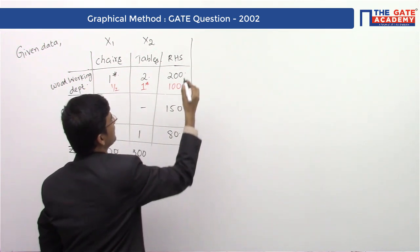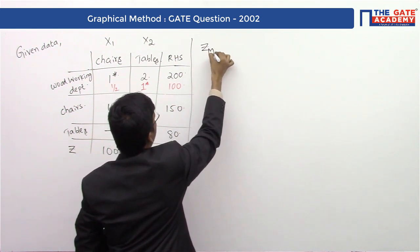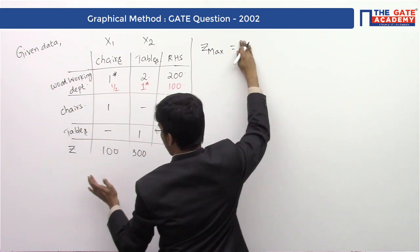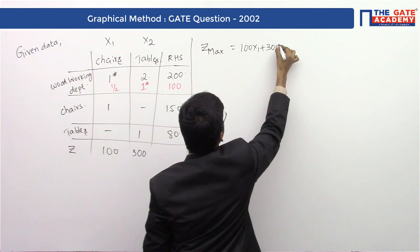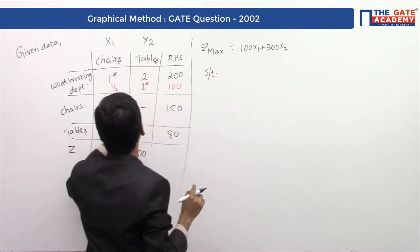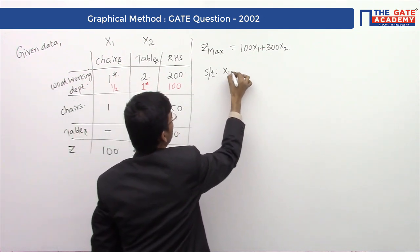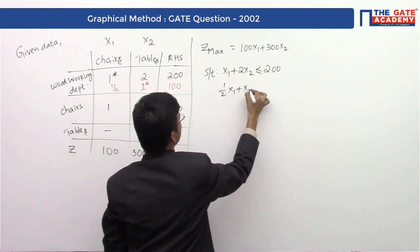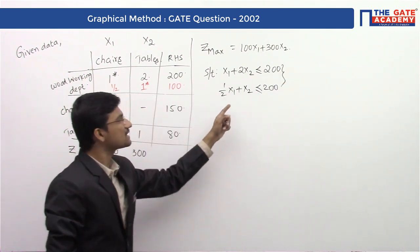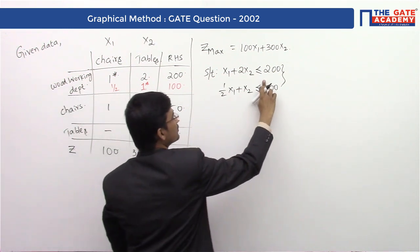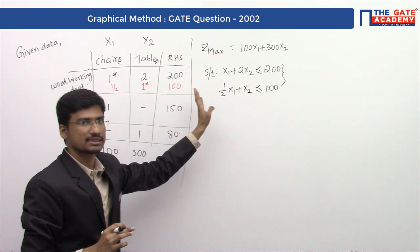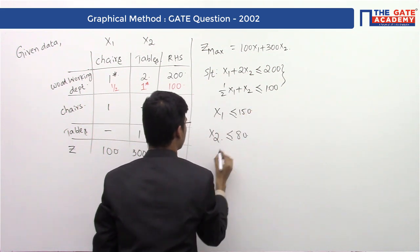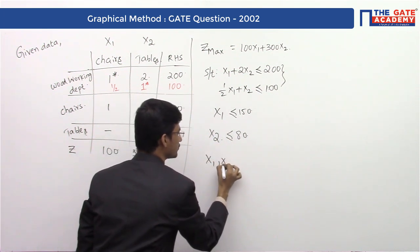Now we write the objective function and constraints. The objective function: since it is a profit, this will be a maximization function — Z max = 100x1 + 300x2. Subject to the constraints: the first constraint is x1 + 2x2 ≤ 200, or equivalently (1/2)x1 + x2 ≤ 100 — both are the same. The next constraint is x1 ≤ 150. The other constraint is x2 ≤ 80. And the non-negativity restrictions: x1, x2 ≥ 0.